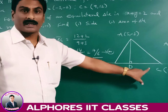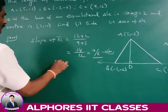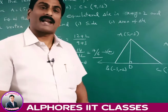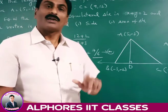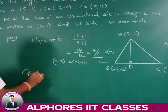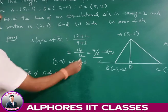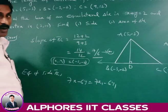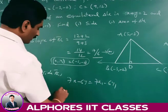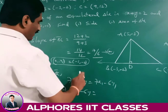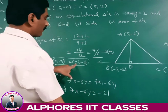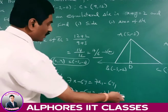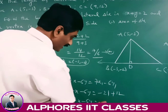Two points are given, so take any one as (X₁, Y₁). Take X₁, Y₁ as (-3, -2). If slope is A/B and point (X₁, Y₁) is given, the equation of the line is AX - BY = AX₁ - BY₁. So the equation of side BC is 7X - 6Y = 7(-3) - 6(-2) = -21 + 12 = -9. Therefore 7X - 6Y + 9 = 0 is the equation of line BC.